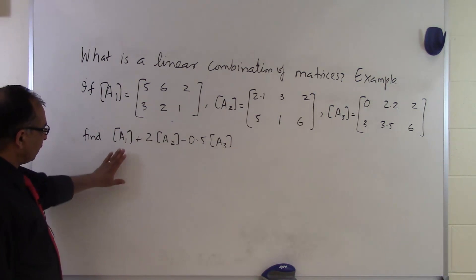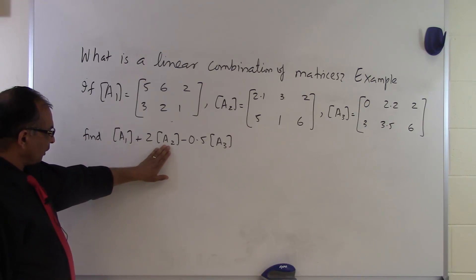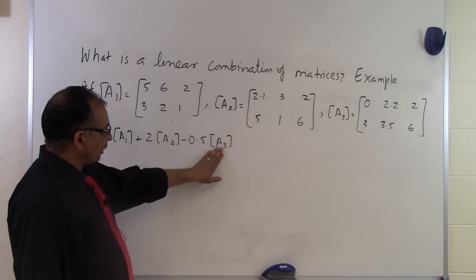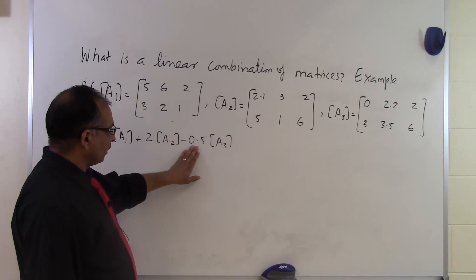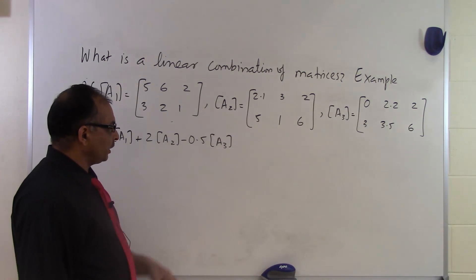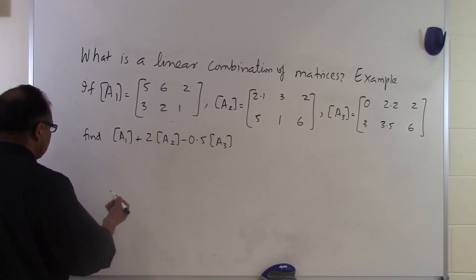So it's pretty straightforward. All you have to do is to take this A1 matrix multiplied by 1 each element, take this A2 matrix multiplied by 2 each and every element, and then take this A3 matrix and multiply each element by minus 0.5 and then simply add element by element. So let's go ahead and do that.